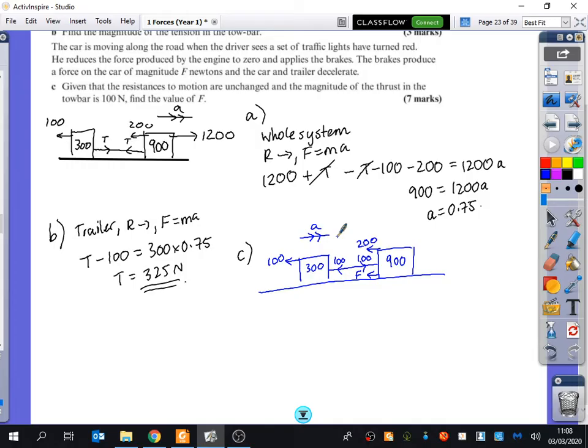Out of those three, which do you think is going to be the best one to begin with and why? The trailer. Why do you think the trailer is the best? It doesn't have this. Yeah, this is the force we don't know about. If you looked at the car, you would have the unknown force and the unknown deceleration. If you looked at the whole system, you would have the unknown force and the unknown deceleration. If you just look at the trailer, you're going to have a much more simple diagram.